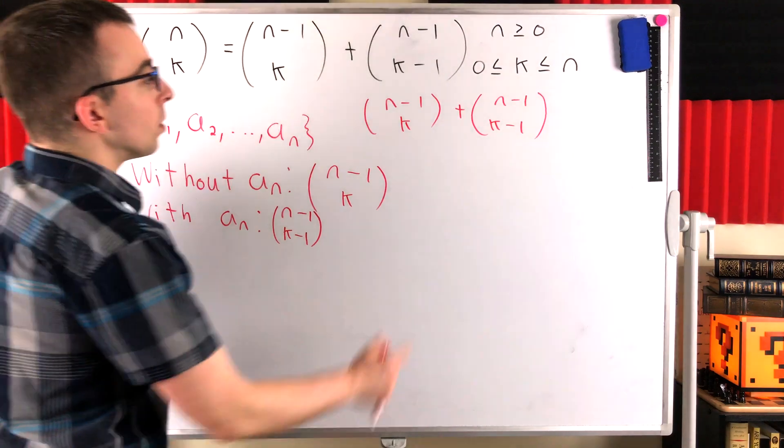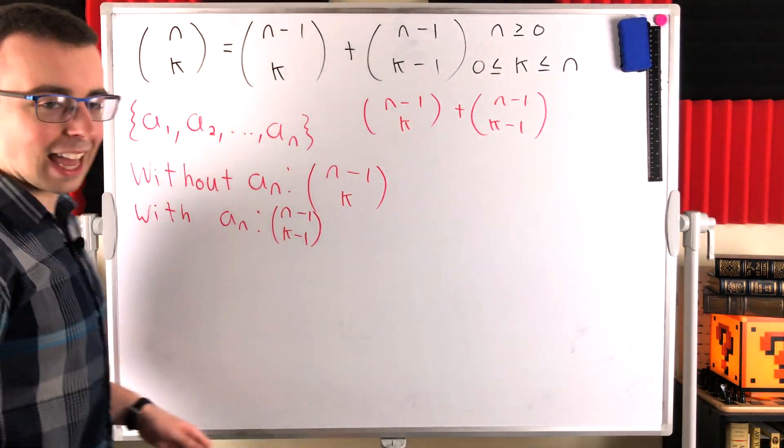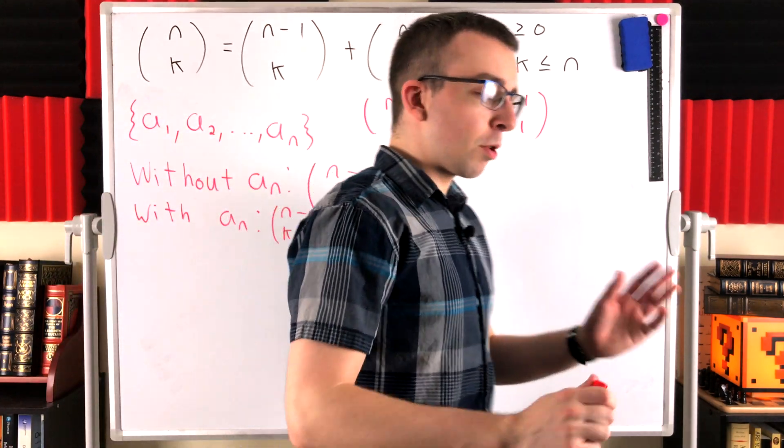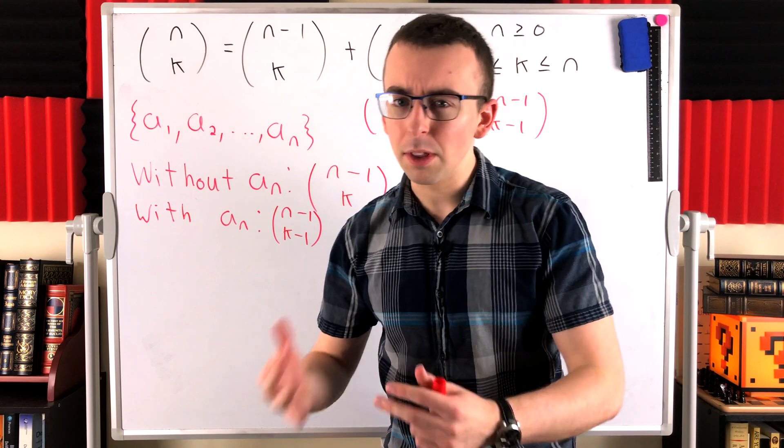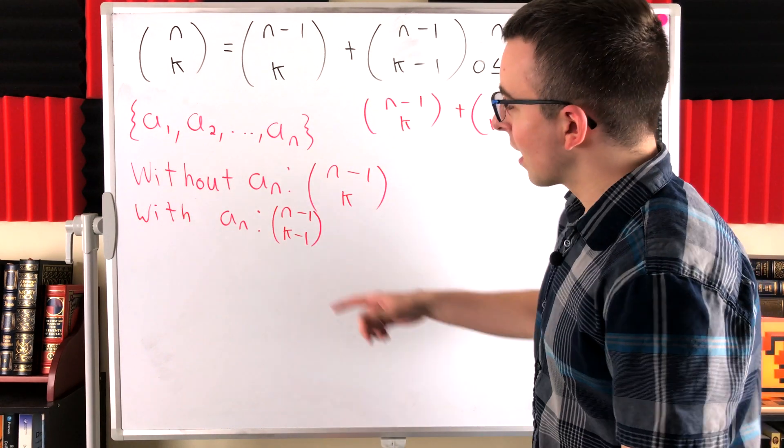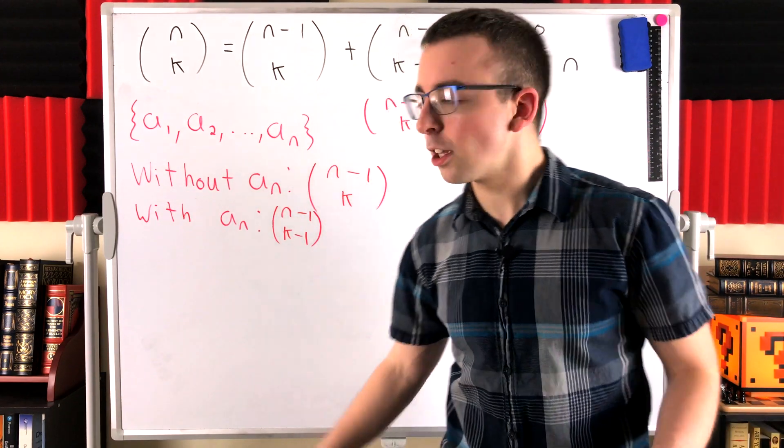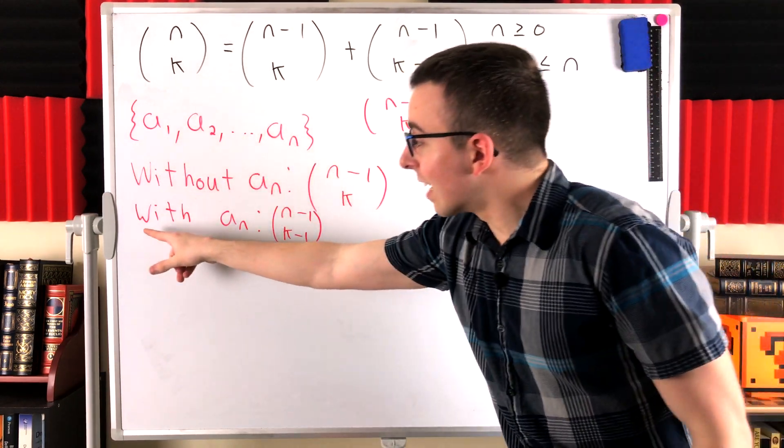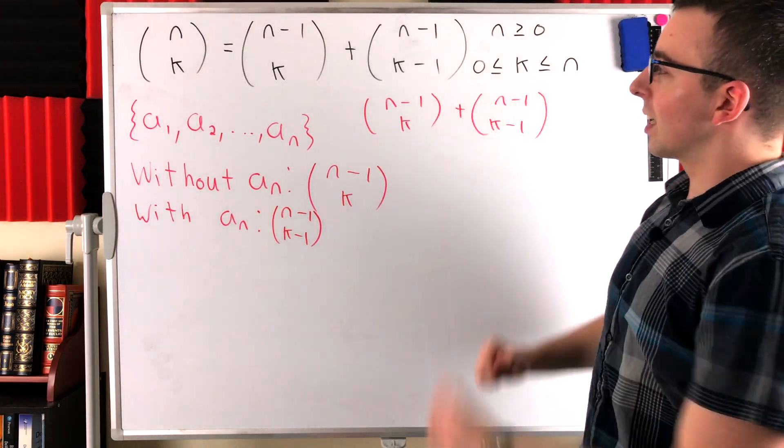n choose k is equal to n minus 1 choose k, plus n minus 1 choose k minus 1. Pretty neat. A really simple strategy of just separating out the collections that we're trying to count, separating them into the collections that don't include some arbitrary fixed element of our set and the collections that do include this element. And then boom, we get the equality.